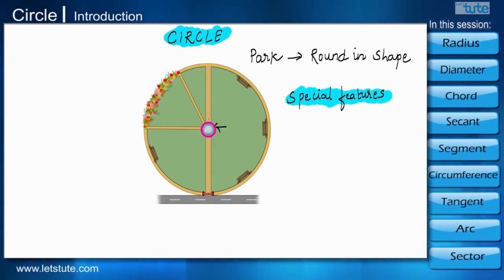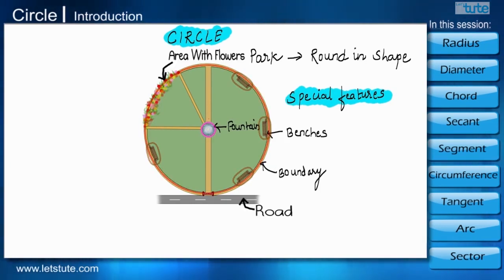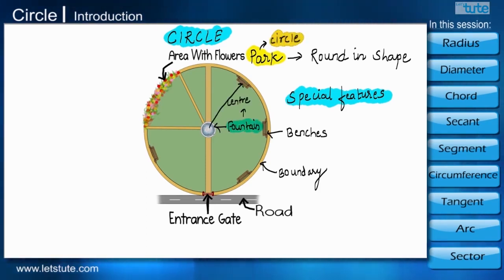Firstly, there is a fountain exactly in the center of the park and benches are put around the boundary of the park. Here, we can see that the park is a circle and the fountain is in the center of the circle and the benches are on the boundary of the park which is equidistant from the fountain.